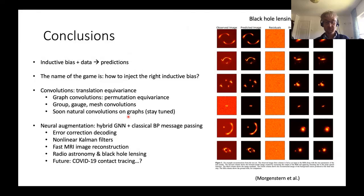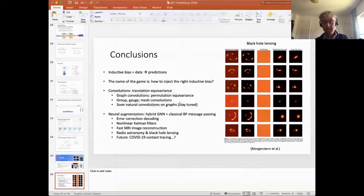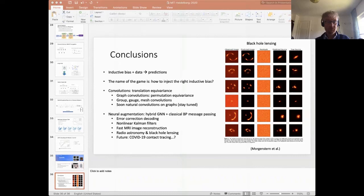Thank you very much for the talk — very impressive. For anyone who joined late, if you're following the live stream, you can enter the chat to ask questions. One question from the beginning relates to causality: to what extent are you also looking at causal inference? Causal structures can be represented as graphs as well — can you comment on that?